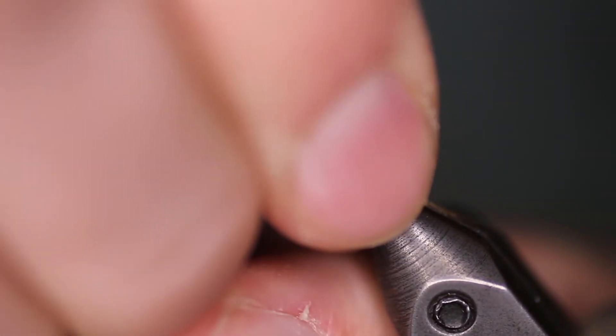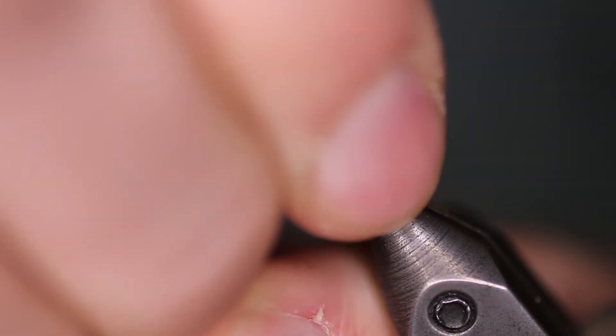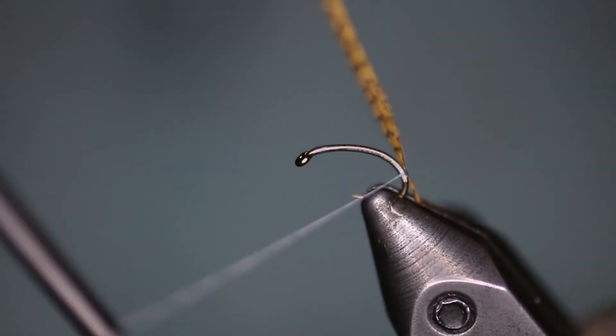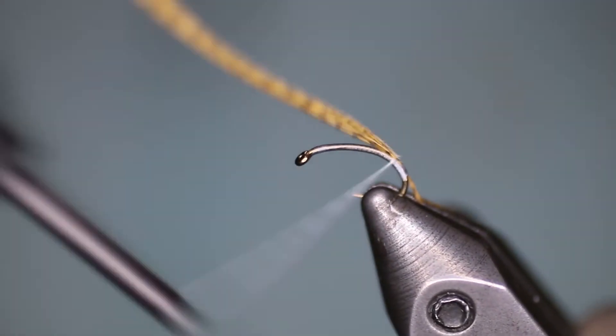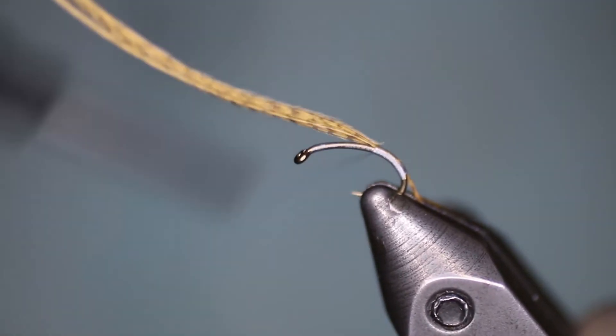So you want to shorten these fibers up so that they're about the length of the gap of the hook here, like so. Now we're going to capture these fibers forward towards the eye of the hook.